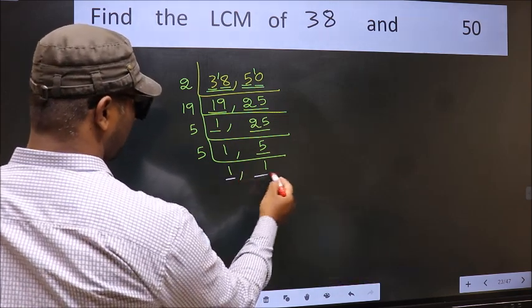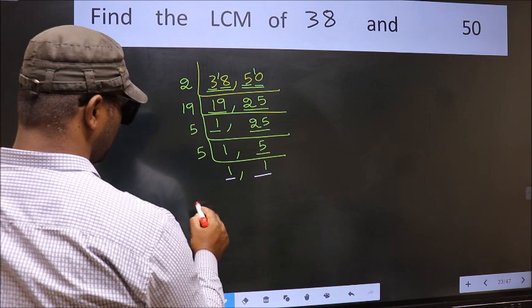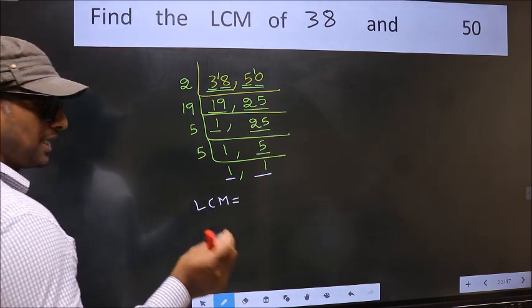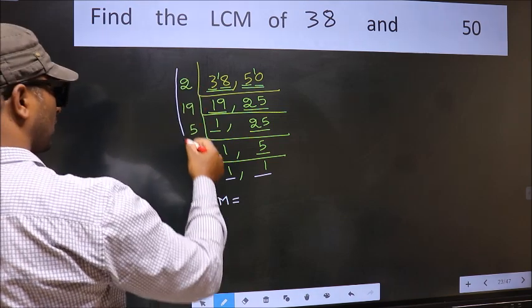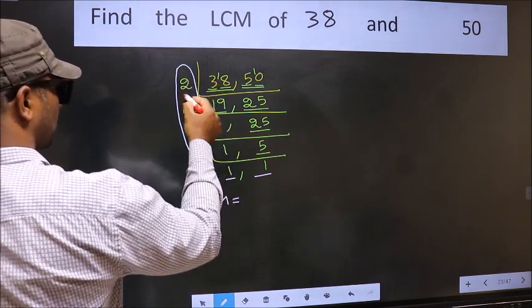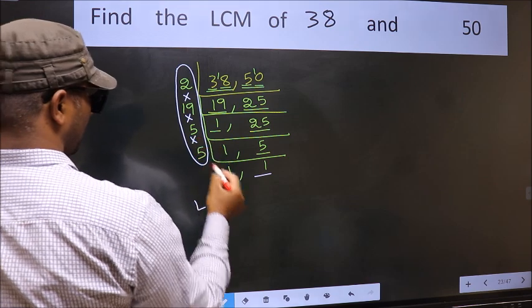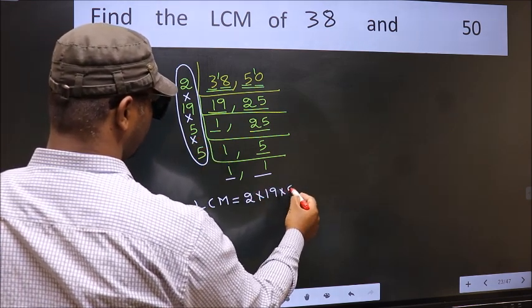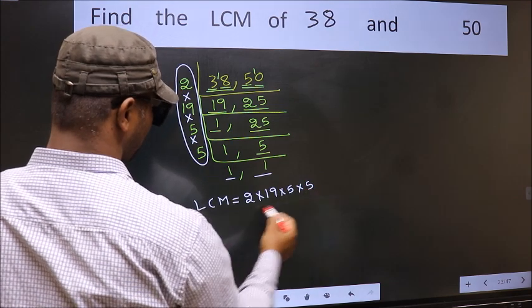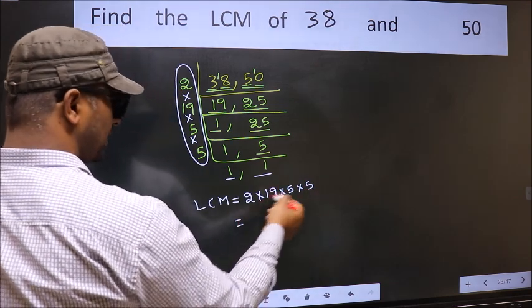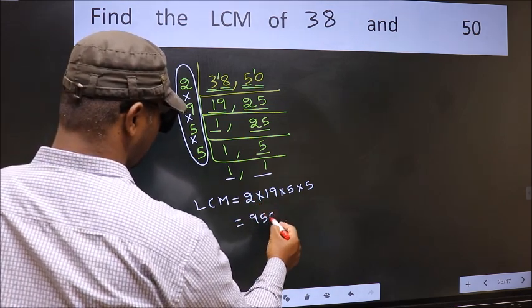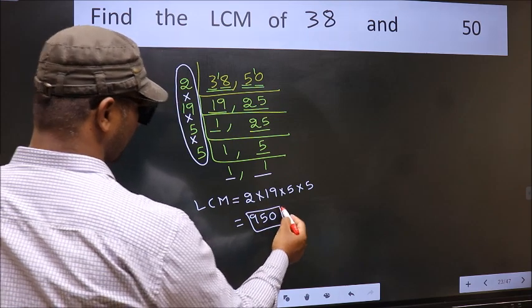So we got 1 in both the places. So our LCM is the product of these numbers, that is 2 into 19 into 5 into 5. When we multiply these numbers, we get 950 as our LCM.